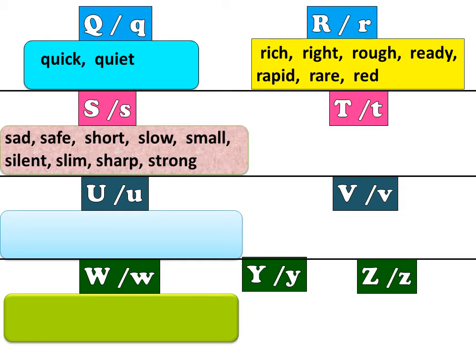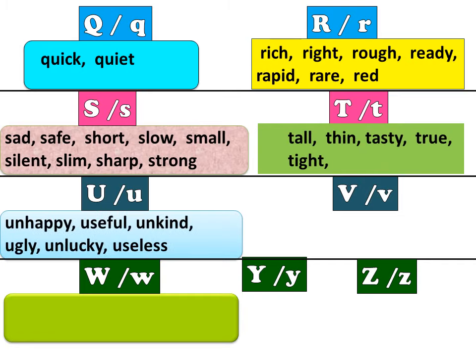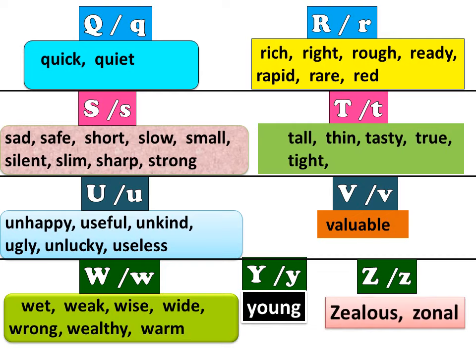S: sad, safe, short, slow, small, silent, slim, sharp, strong. T: tall, thin, tasty, true, tight. U: unhappy, useful, unkind, ugly, unlucky, useless. V: valuable. W: well, wet, weak, wise, white, wrong, wealthy, warm. Y: young. And Z: zealous, zonal.